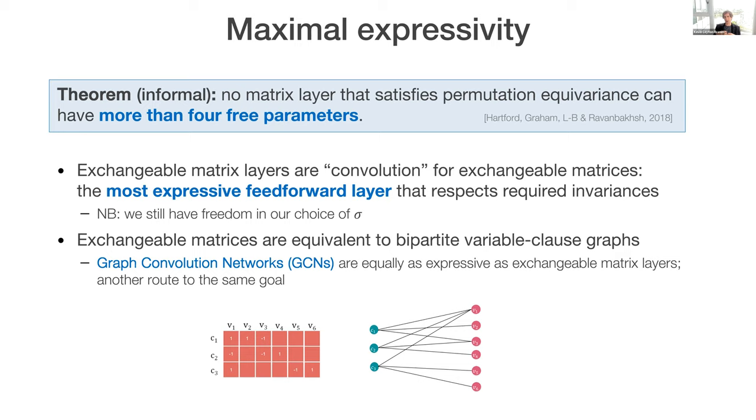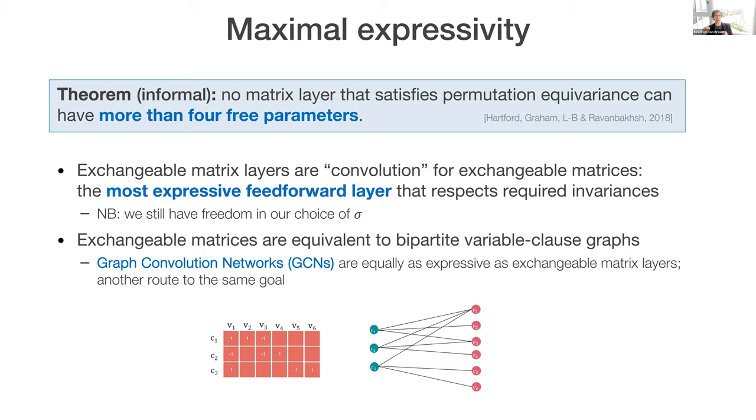And this ICML paper with Jason, Devin, and Siamak culminated in a theorem that said that this is sort of maximally expressive if what you want is permutation equivalence. So you can't satisfy permutation equivalence with more than four free parameters. So this is an argument that these exchangeable matrix layers amount to a kind of convolution for exchangeable matrices. It's the most expressive feedforward layer that you can have that respects these equivalences. Let me note that since we did this work, graph convolution networks, GCNs, have become popular, and they're just really a different route up the same mountain. They're also as expressive as what I've just defined. If this is your favorite family of models, go forward and use them. We built on the thing that we previously did, but we haven't seen any particular reason why one is better than the other. And that builds from the fact that the variable clause graph, the bipartite variable clause graph is an equivalent representation to this matrix that I've been talking about.